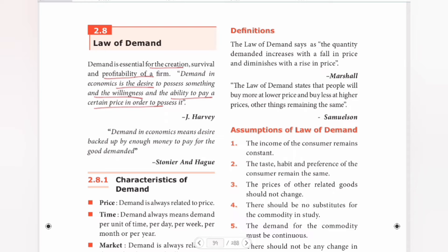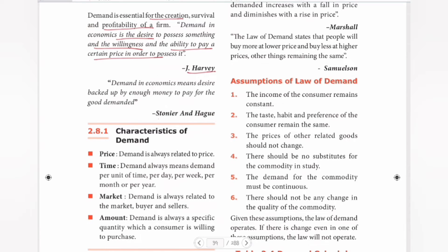The next part is J. Harvey. Next, demand is Stoner and Harg. Demand in economics means desire backed up by enough money to pay for the good demanded. If you say good, it is goods, because in economics it is important that we talk about goods, commodities and goods. So if there is a demand, I need to get this, I will be having some money to pay for it.